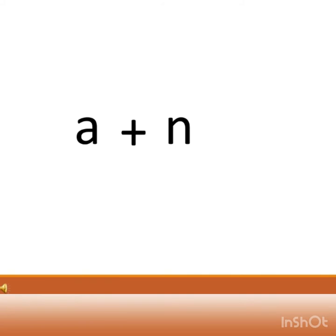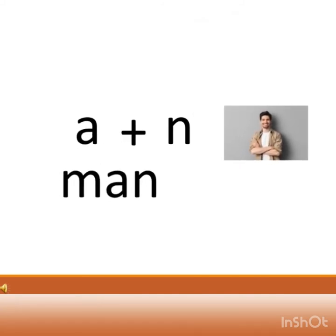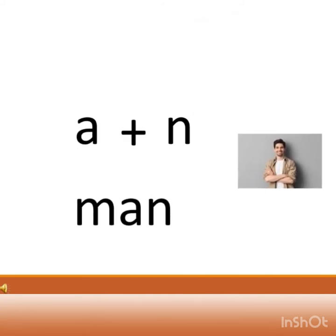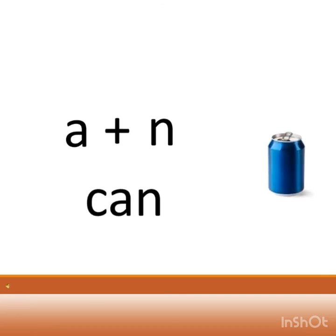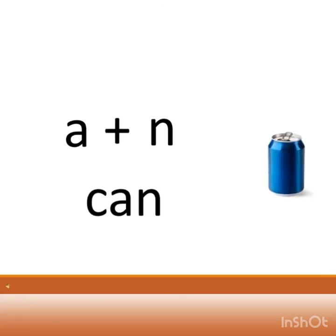Children, again: A says 'a' plus N says 'n', when they are together what sound do they make? 'An'. And the word is M-AN: man. Now moving to the next page: A says 'a' plus N says 'n', when they are together they say 'an', and the word is K-AN: can.